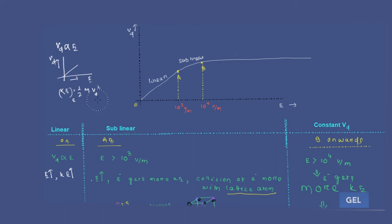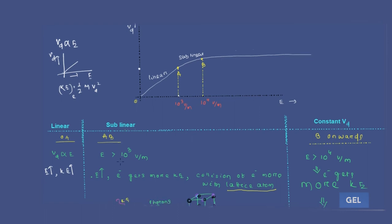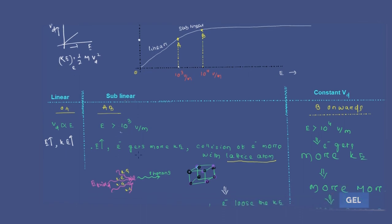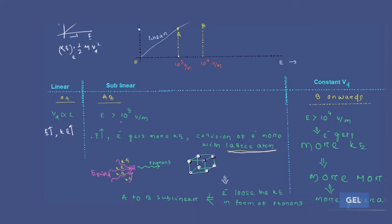Kinetic energy increases up to a certain limit. If you apply an electric field greater than around 10³ V/m, the electron gets more kinetic energy and crosses that limit. As a result, collisions of electrons with lattice atoms occur — the electrons start colliding with the lattice points.